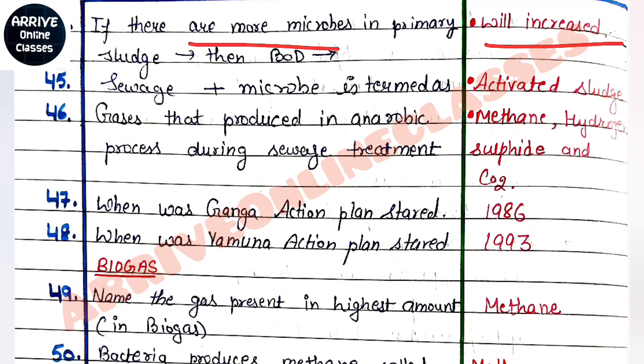Next question: sewage plus microbe is termed as what? If there is sewage and there are microbes in it to digest organic matter, then we call it activated sludge.